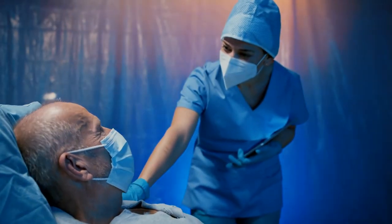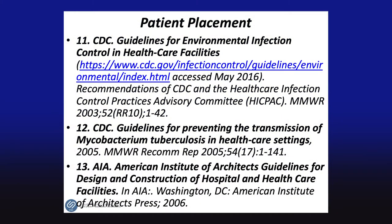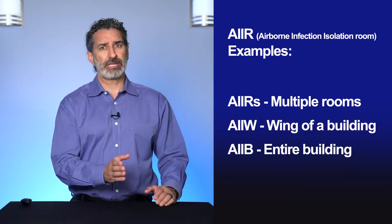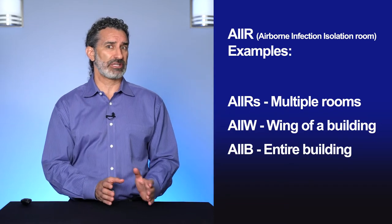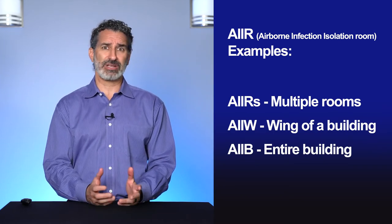In acute care hospitals and long-term care settings, place patients who require airborne precautions in AIIRs constructed in accordance with current accepted guidelines. Specific guidelines include the CDC guidelines for environmental infection control in healthcare facilities, the CDC guidelines for preventing transmission of Mycobacterium tuberculosis in healthcare settings, and the American Institute of Architects guidelines for design and construction of hospital and healthcare facilities. Keep in mind that sometimes you may need multiple rooms — an airborne infection isolation wing — or even an entire building dedicated to isolation.